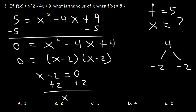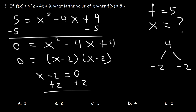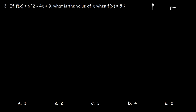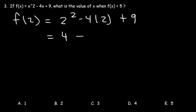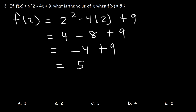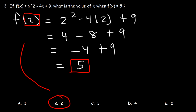Now let's check our work. If we plug in 2, will it give us 5? It's going to be 2 squared minus 4 times 2 plus 9. 2 squared is 4, 4 times 2 is 8, and 4 minus 8 is negative 4. Negative 4 plus 9 is 5. So clearly, x is indeed equal to 2, which means b is the right answer.